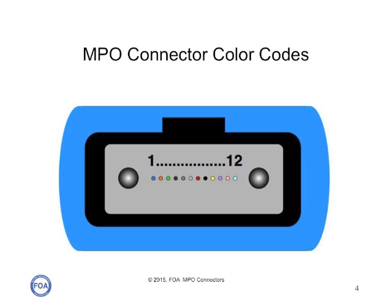Besides pins and no pins, and key up and key down, we've got the arrangement of the fibers in the 12-fiber array. What we've shown here is fibers 1 to 12 using the standard fiber color codes, starting with blue in position 1 and ending with aqua in position 12. That's just where we're going to start.